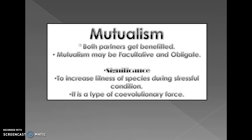Mutualism — both partners get benefited. Mutualism may be facultative or obligate. It is a type of positive interaction — both species are benefiting and helpful to each other. Topics of mutualism, commensalism, parasitism, and mimicry are very big topics.